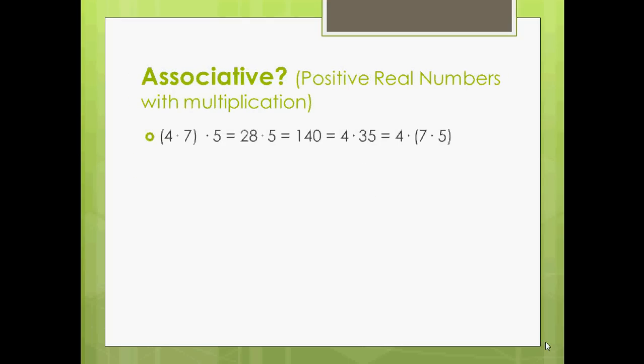Next step, we're going to check and see if it's associative. Associative means basically, if you regroup numbers in a different order, do you get the same thing? Yes, you do. Four times seven times five — no matter what order you do it in, you're going to get 140. To show what that formula means: associativity means (a★b)★c = a★(b★c). It is associative.